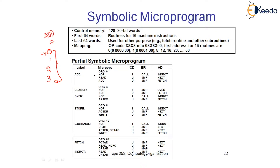The first micro instruction for addition operation is no operation. A micro instruction has the fields F1, F2, F3, CD, BR, and address. F1, F2, and F3 are all no operation — simply 0, 0, 0, 0, 0, 0, 0, 0, 0 — meaning no operation.